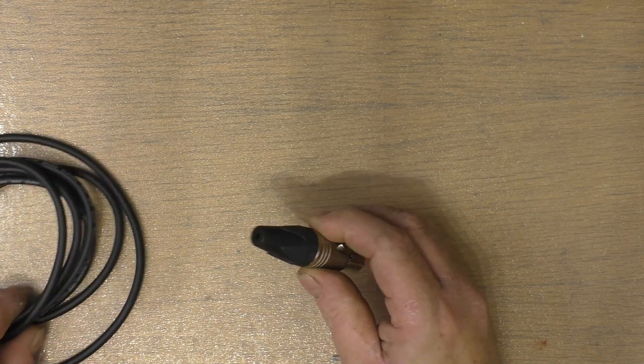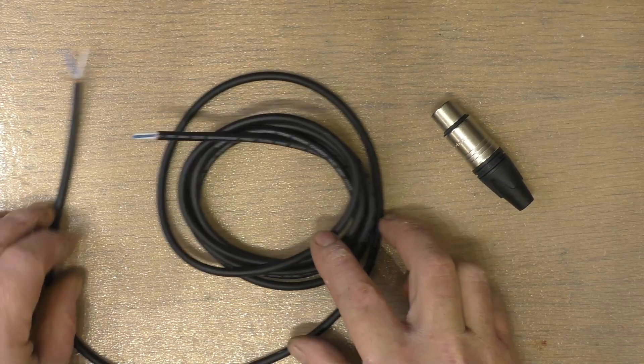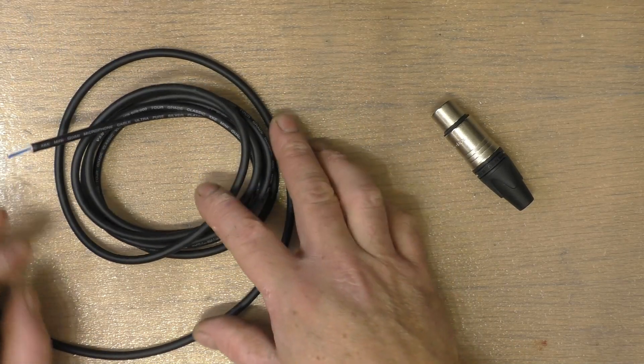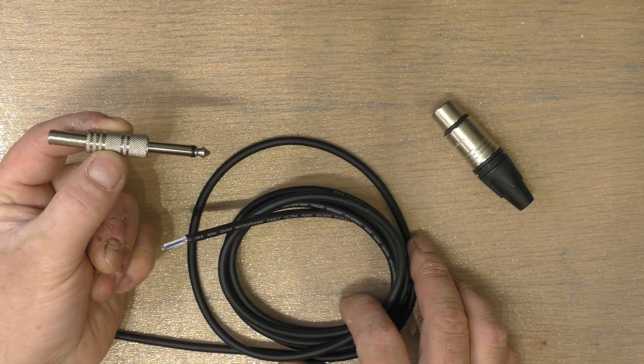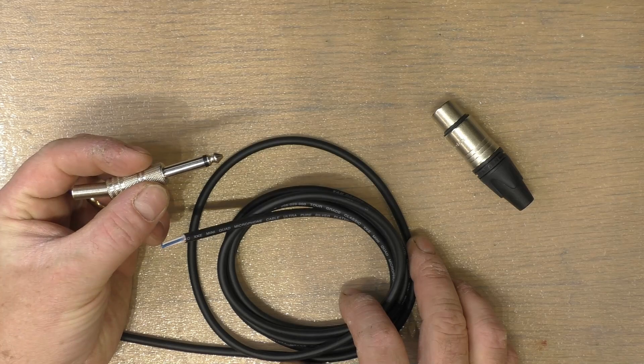We have our XLR which is a female, we have about a meter and a half of the Van Damme mini star quad cable, and we have a quarter inch TS which is a tip sleeve plug. Now for handiness I've stripped the ends of the cable and we'll go from there.